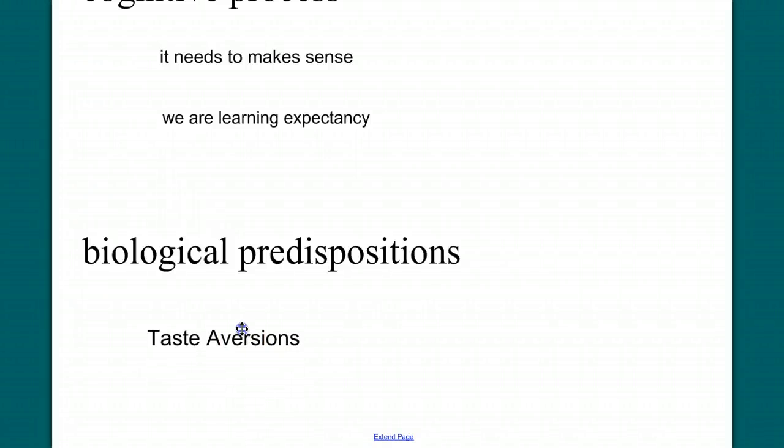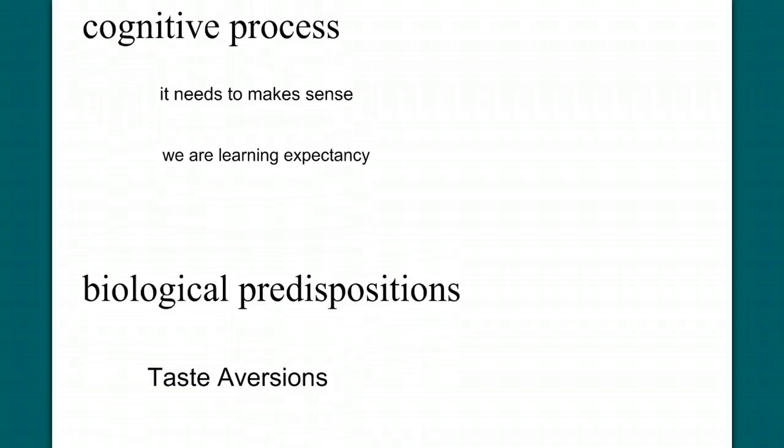An easy example is found in our learning of taste aversions or food aversions. We very quickly learn to avoid foods that make us sick. In most classical conditioning examples, we need repeated pairings of the neutral stimulus with the unconditional stimulus to learn the association. But with taste aversions, we can learn this association in one single pairing. And that makes sense from a biological perspective. From evolutionary adaptability, we don't want to have to repeatedly have to eat tainted food and get sick to learn that the tainted food is bad for us.